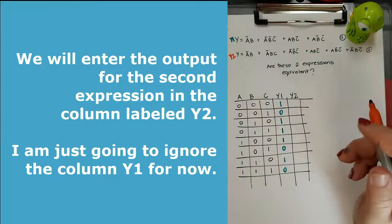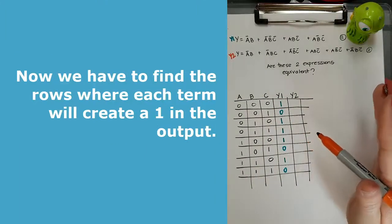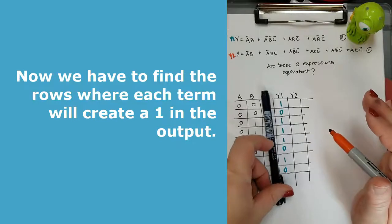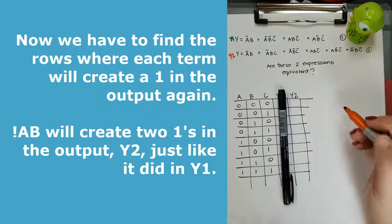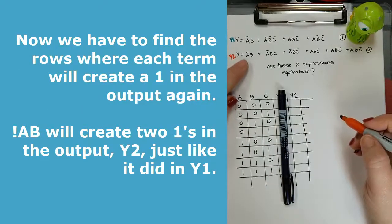So I've got to do the same step. I've got to enter the ones. So not A, B puts a one in two places.